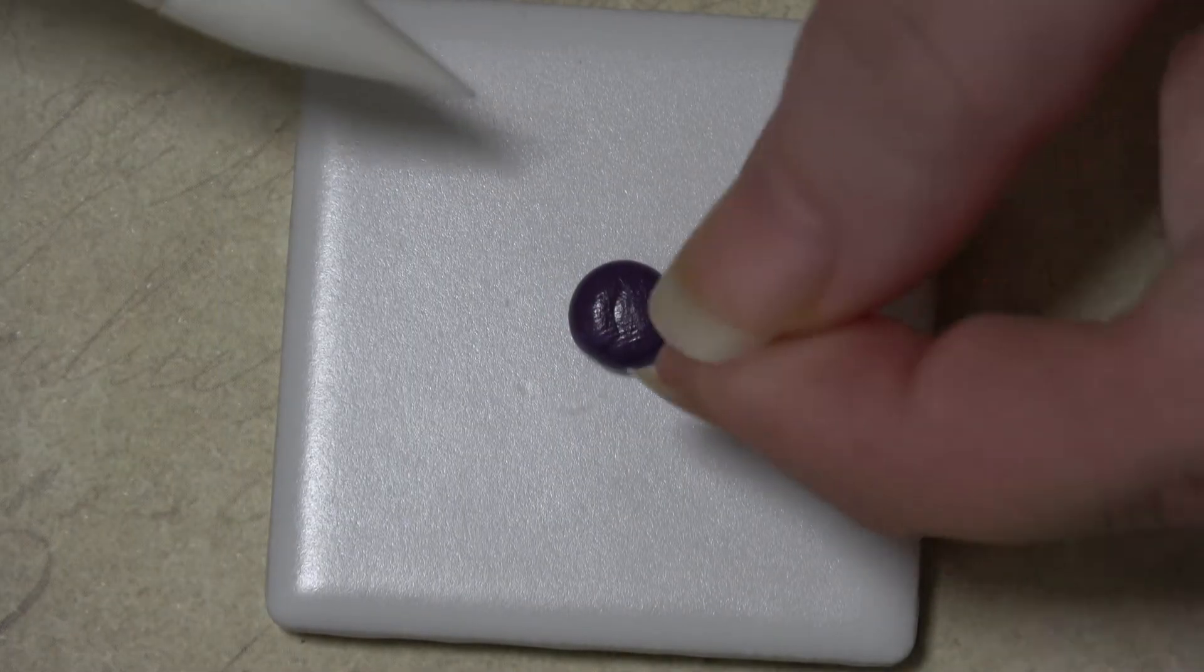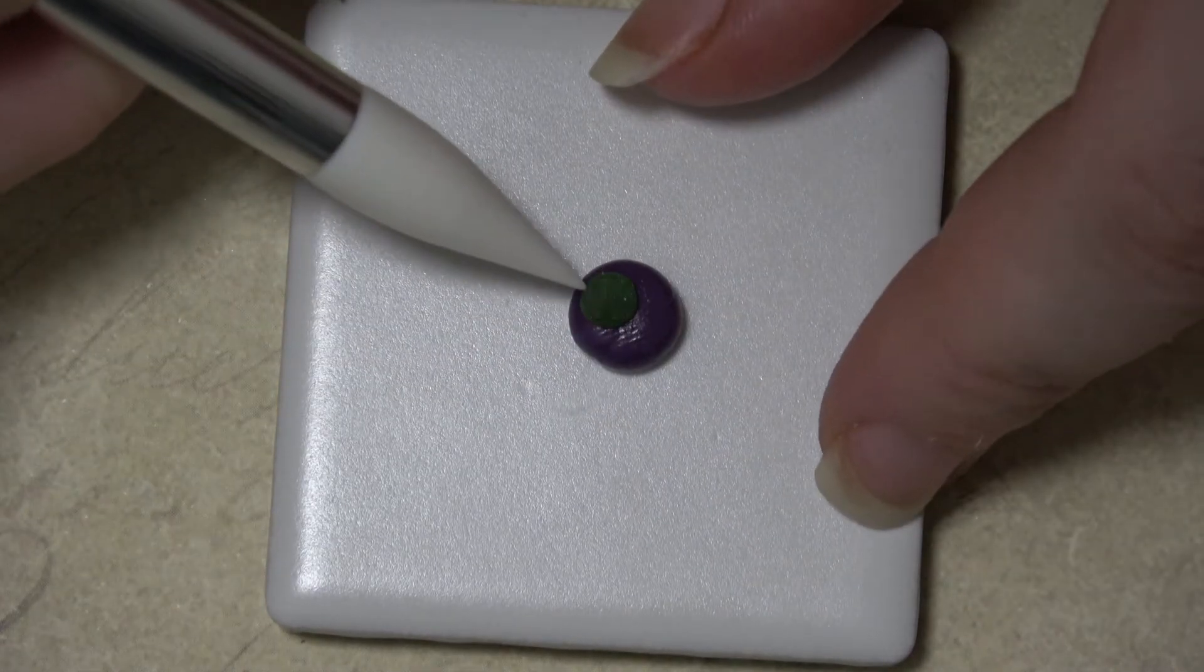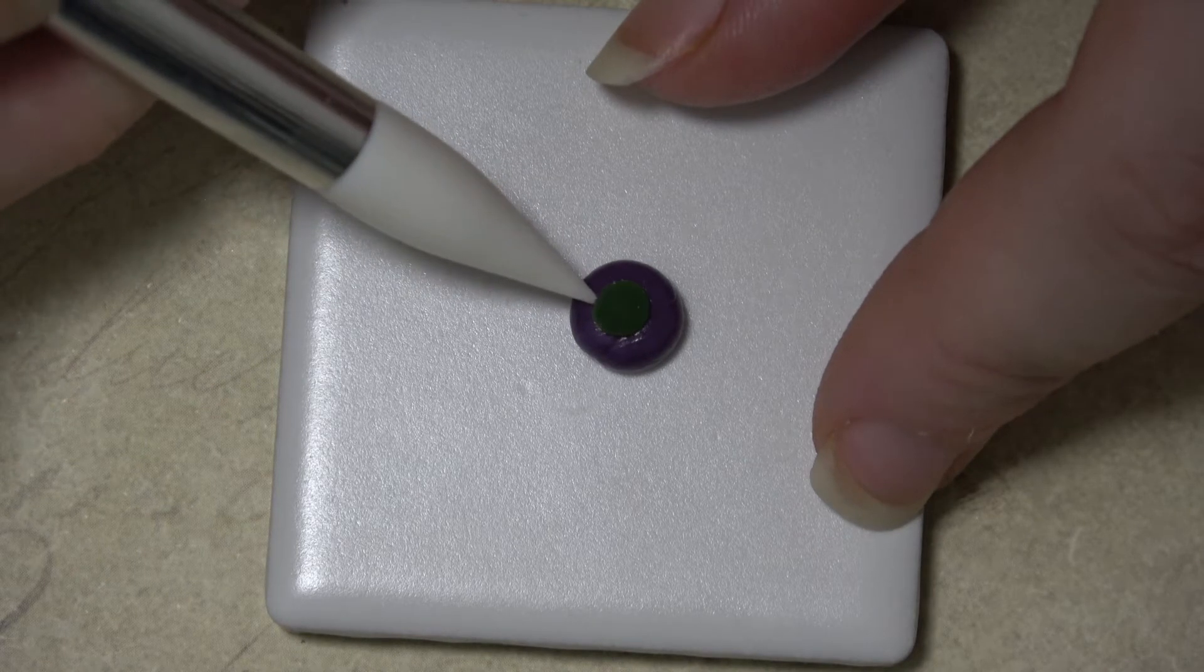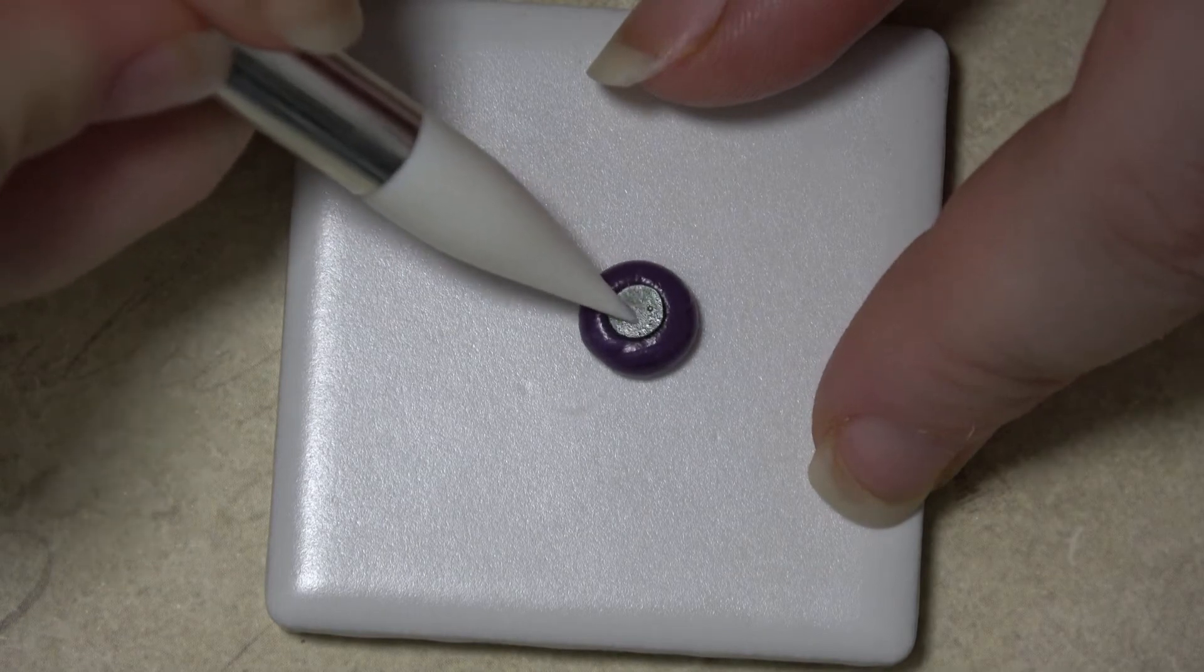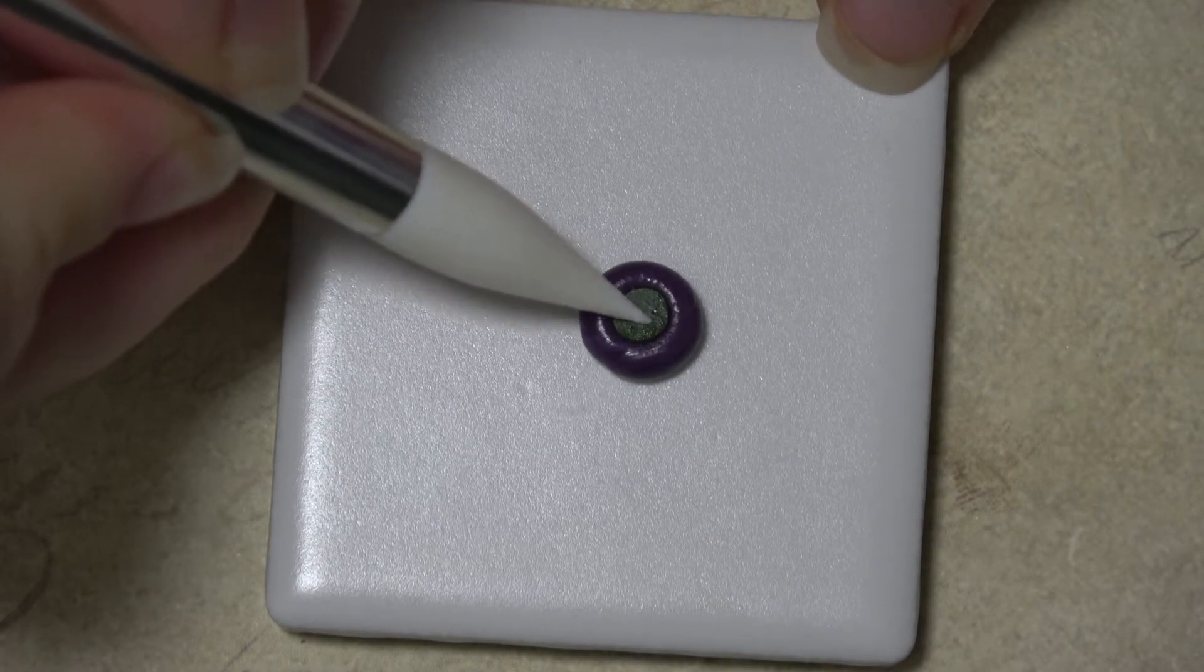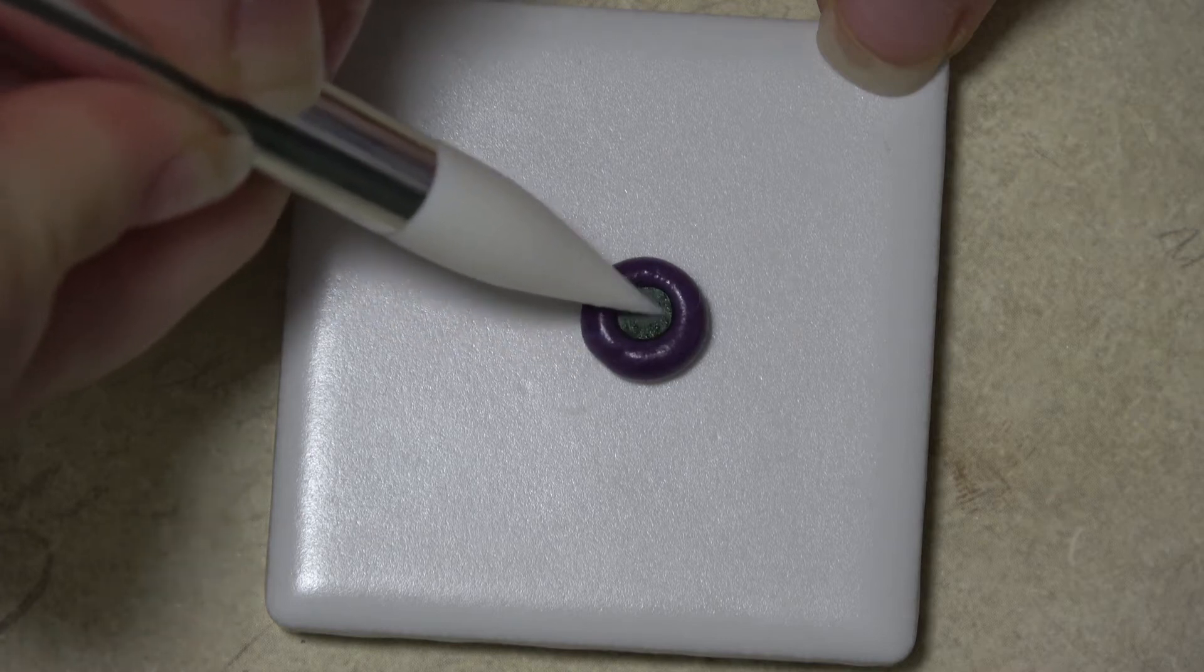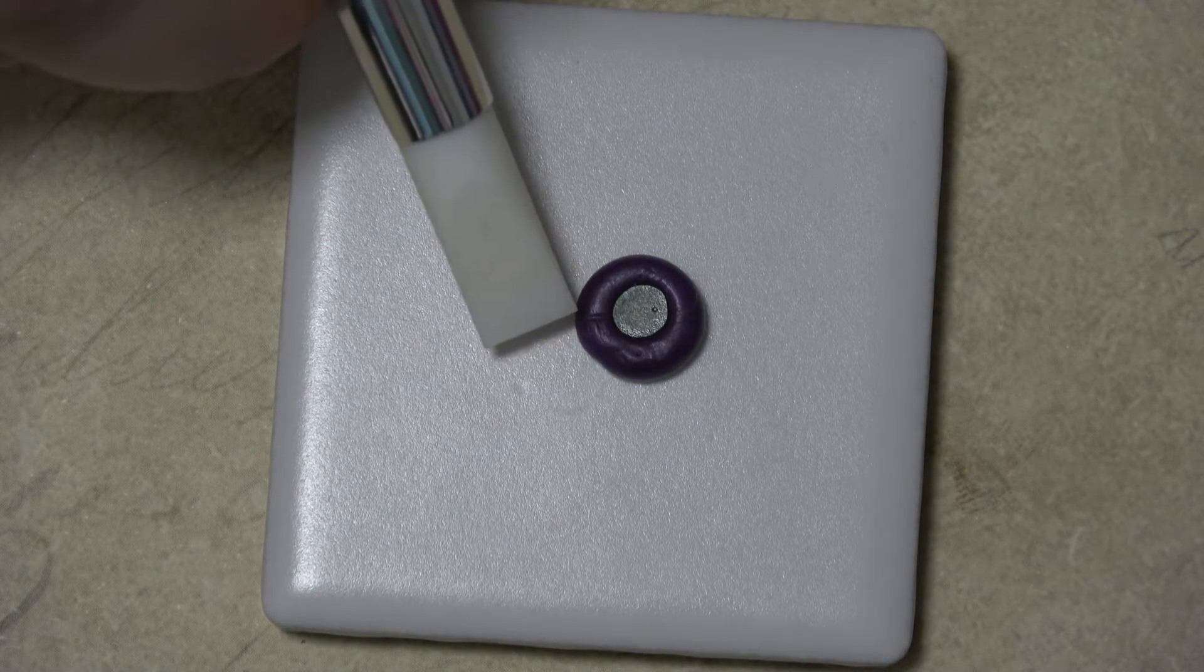Once your circle has cooled, gently push it into some silicone mold putty to form an impression. I also put a small indent on one side of the mold to hold the lollipop stick.